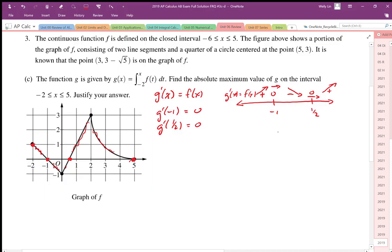So then we have to consider our candidates test here and we need to consider our endpoint at negative 2, our local max at negative 1, and our endpoint at positive 5.